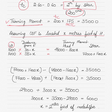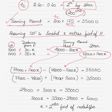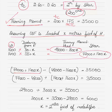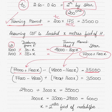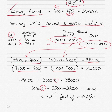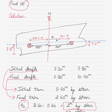The resultant trimming moment is trimming moment by stern minus trimming moment by head, since 77,000 is the larger number. Setting this equal to 35,000 and solving the equation gives X equals 2 meters forward of the midships. If you had assumed the center of rotation to be aft, you would have obtained a negative answer, confirming it must be forward.